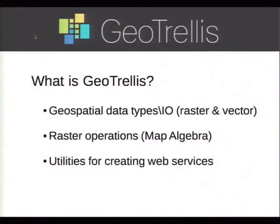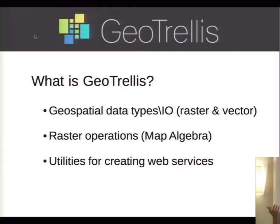This talk is about GeoTrellis and how we're working to add geospatial capabilities to Spark. GeoTrellis is a Scala library that provides geospatial data types and input and output for those data types. It provides both raster and vector operations, but has traditionally focused more on raster than vector. We wrap around the Java Topology Suite to provide Scala vector data types.